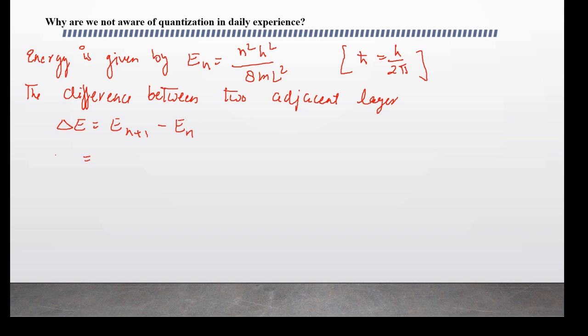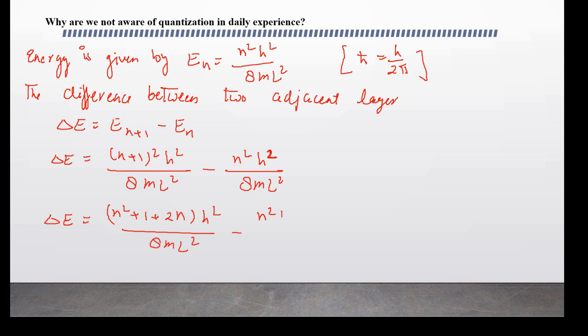What will n plus 1 be? n plus 1 squared h squared upon 8mL squared minus n squared h squared upon 8mL squared. We will open whole square: n squared plus 1 plus 2n, h squared upon 8mL squared minus n squared h squared upon 8mL squared. Cross terms cancel, giving us (2n plus 1) h squared upon 8mL squared.